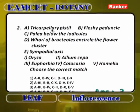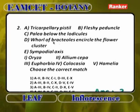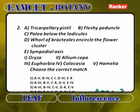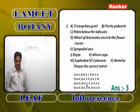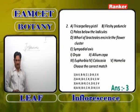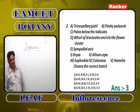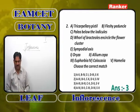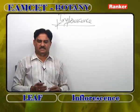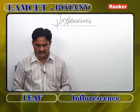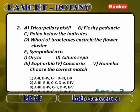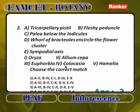Next question: match features to plants. Tricarpellary pistil (A) is found in Euphorbia (3) — single female flower with tricarpellary, syncarpous, trilocular ovary. Fleshy peduncle (B) is Colocasia (4) — peduncle is fleshy with upper male flowers, lower female flowers, and central neuter flowers.